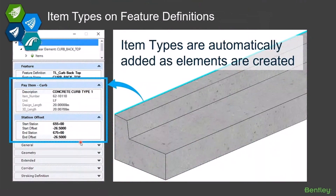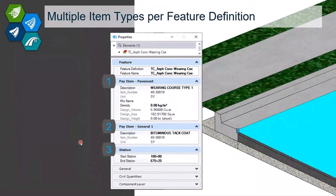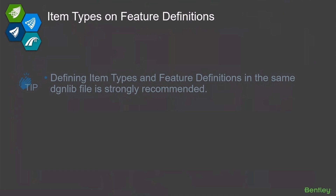When you create those, they automatically end up on those elements. It can be multiple item types — two, three, four, ten, whatever you need — and it will end up on those elements. Now, a couple of things that get people into trouble sometimes: number one is where do I define my item types and my feature definitions?